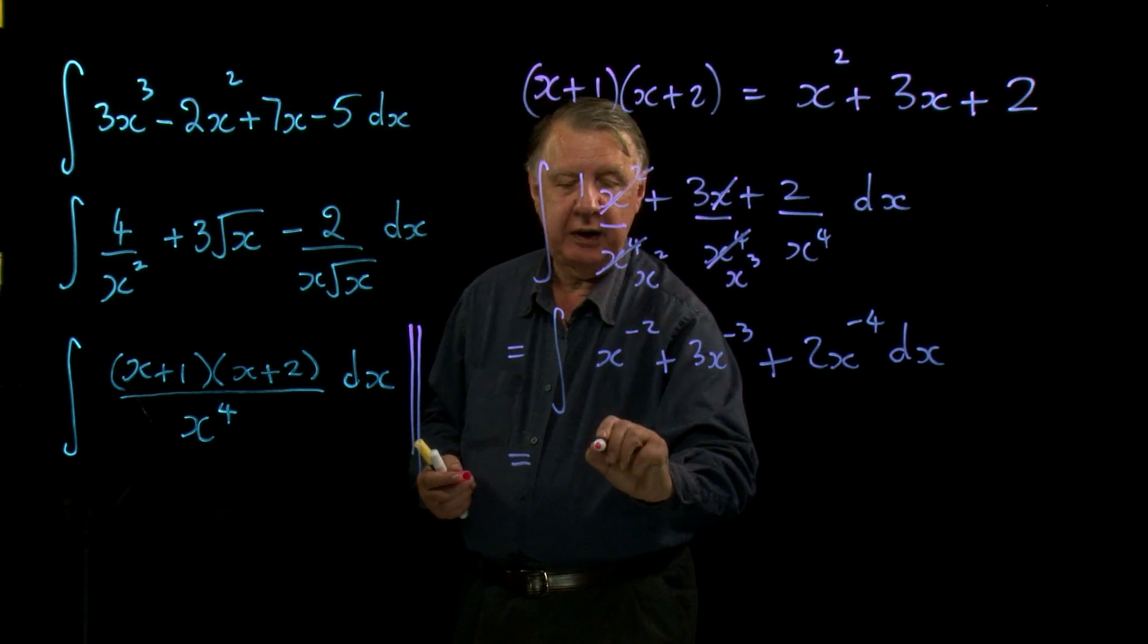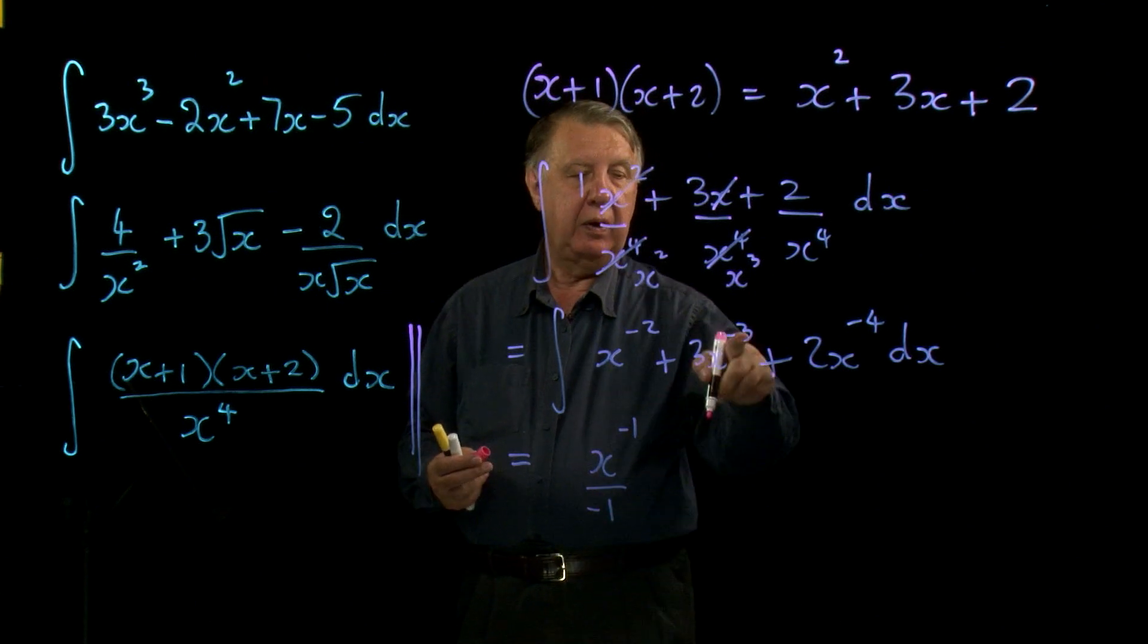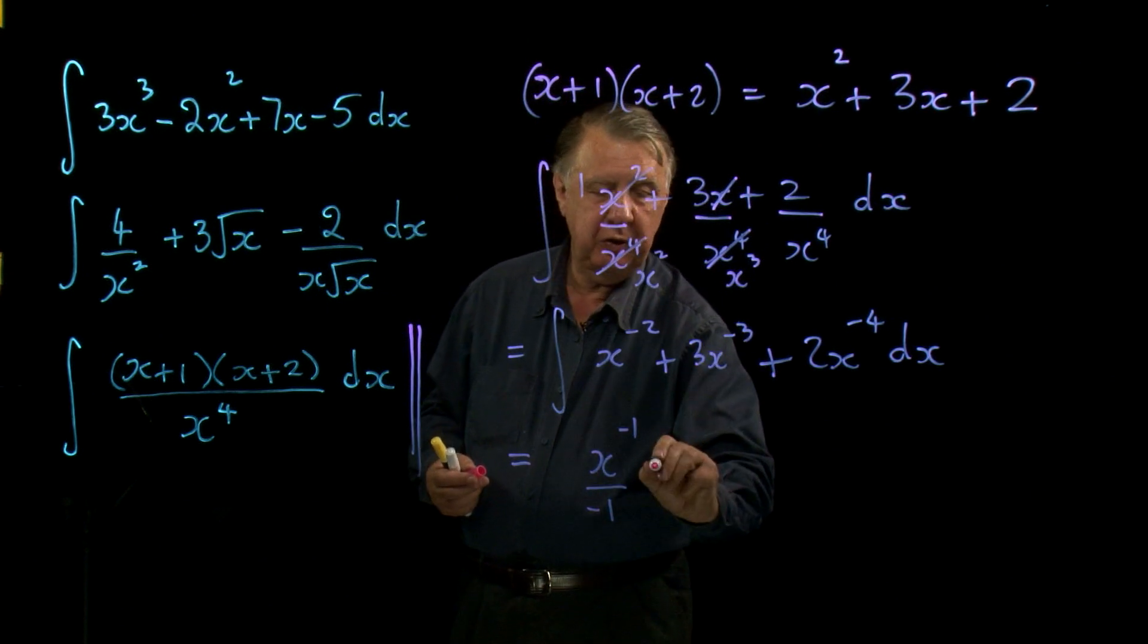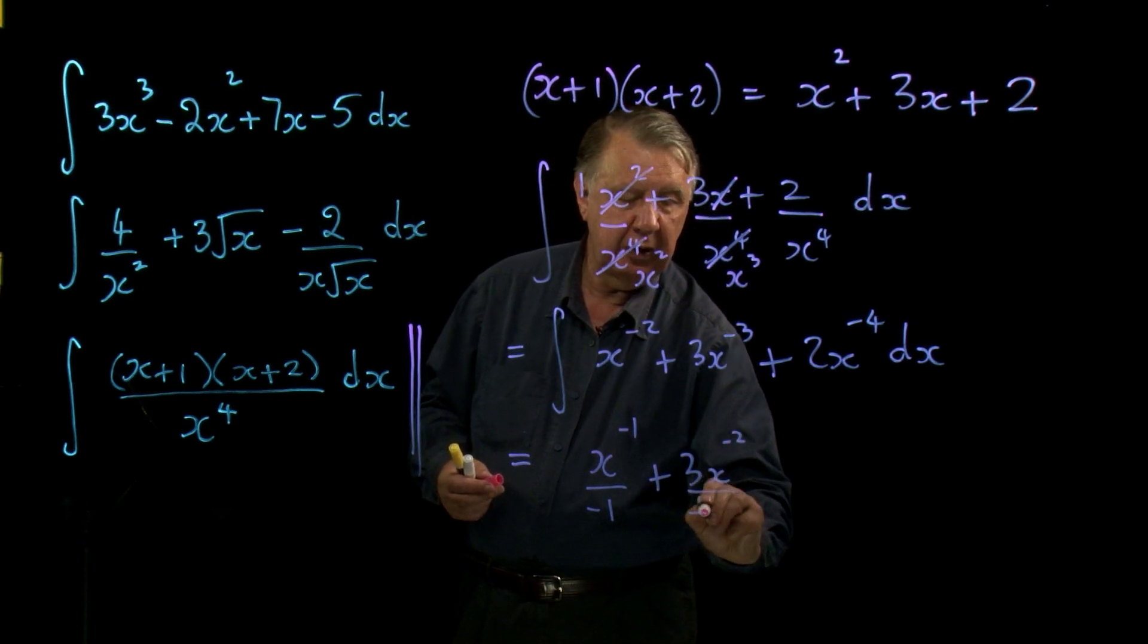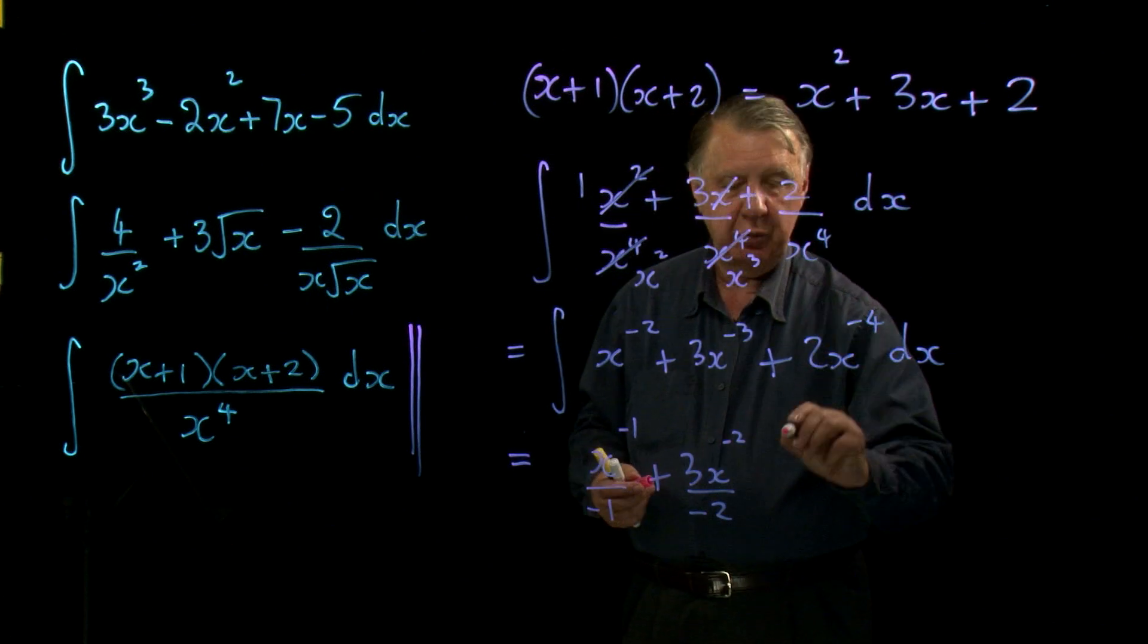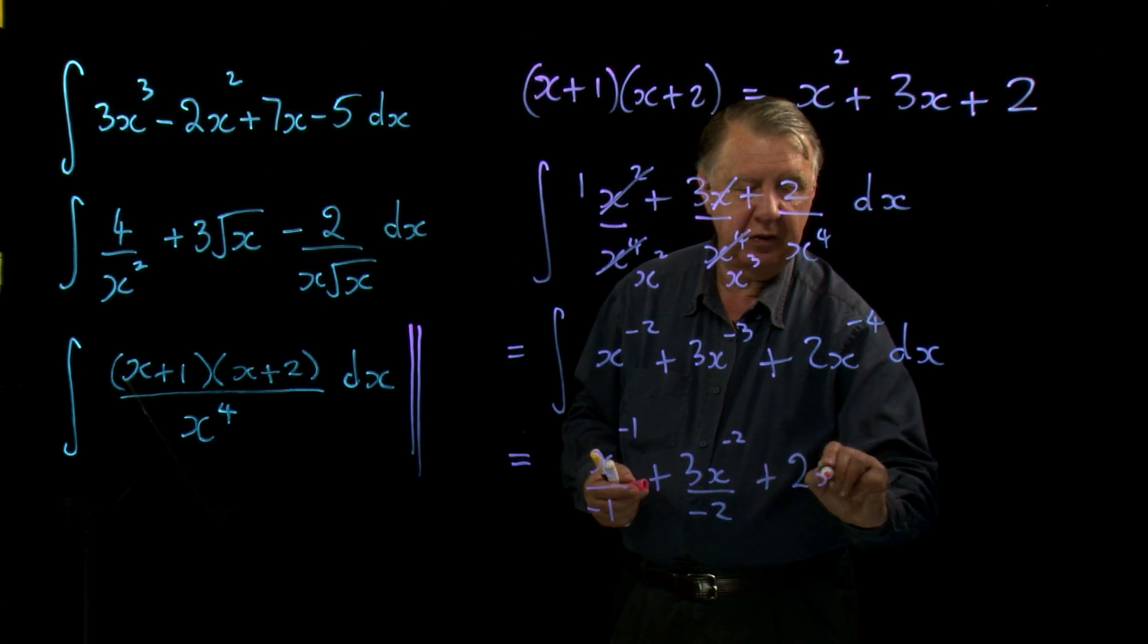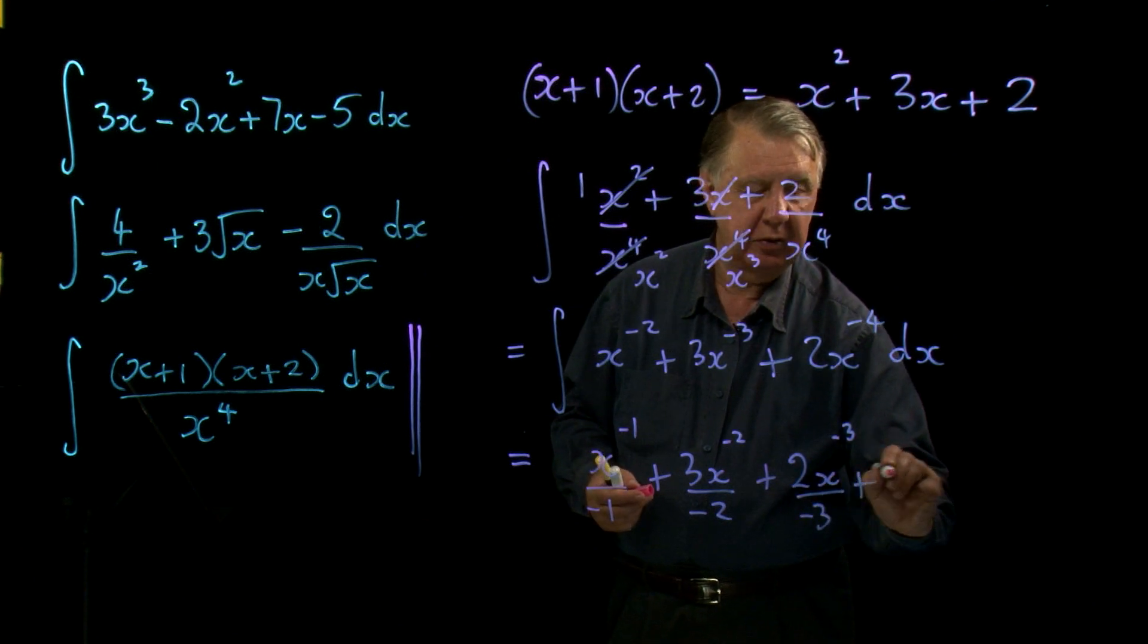Off we go. Add 1, x to the negative 1 over negative 1. Add 1 to that is negative 2. 2x to the negative 2. 3x to the negative 2 over negative 2. And finally, add 1 to this, x to the negative 3 over negative 3 plus c.